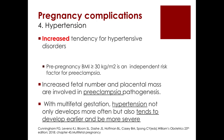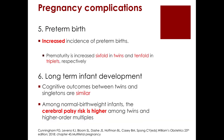The fourth complication is hypertension, especially when pre-pregnancy BMI is more than 30 kg/m². The increased fetal number and placental mass are the pathology involved. With multifetal gestation, hypertension not only develops more often but also tends to develop earlier and be more severe. The incidence of prematurity is increased six-fold among twins and ten-fold in triplets.